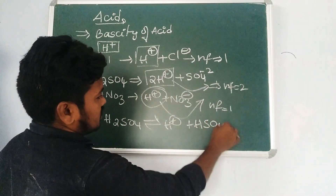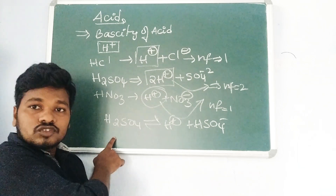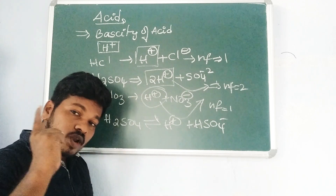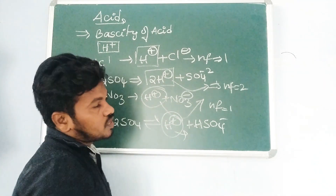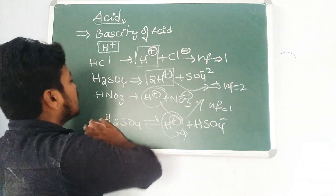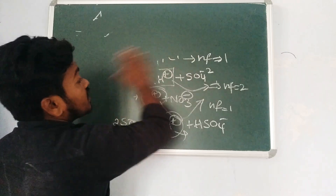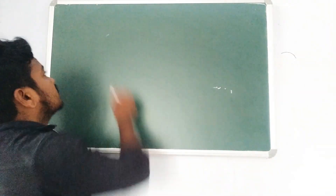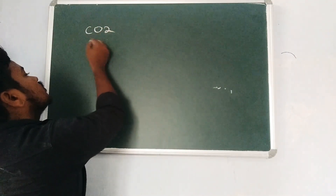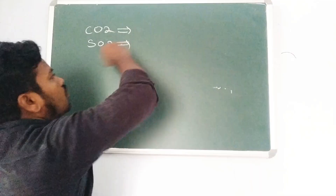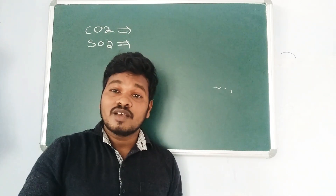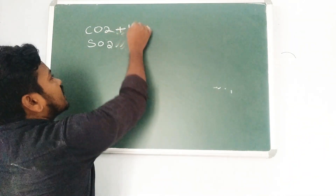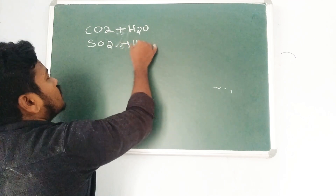In the reaction H₂SO₄ → H⁺ + HSO₄⁻, only one H⁺ is released, so n-factor is 1. Always remember: the n-factor equals how many H⁺ ions are replaceable or released on dissociation. For molecules like CO₂ and SO₂ that have no H⁺, we add a water molecule to determine the n-factor.